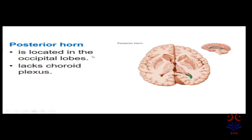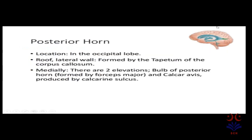The posterior horn is located in the occipital lobe. It also lacks choroid plexus — so there is no choroid plexus in the anterior and posterior horns of the lateral ventricle. The boundaries of the posterior horn: the roof and lateral wall are formed by the tapetum of the corpus callosum. Medially there are two elevations — one is the bulb of the posterior horn, which is formed by the forceps major, and second is the calcar avis.